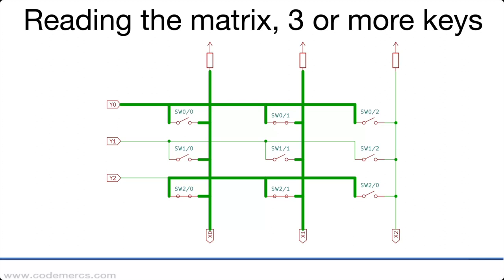In this example here, when the y0 line is pulled low, the x1 line gets pulled low through the key on the coordinate x1 y0, which in turn puts down the y2 line because there is a key on x1 y2 which is closed, and the switch on the coordinate x0 y2 also pulls down the x0 line. So for the controller it appears like on the y0 line the keys on the positions x0 and x1 are both pressed, and it cannot tell that apart from the actual situation where both of these keys are pressed.